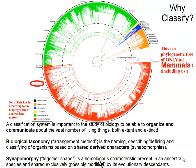Specifically, synapomorphies are homologous characteristics present in an ancestral species and shared — possibly modified — by its evolutionary descendants. An example is a backbone. All vertebrates have a vertebral column. The backbone in all vertebrates is a homologous structure shared along with the ancestor that was the first to have a backbone. So all vertebrates are related to each other because they all share that synapomorphy inherited from a common ancestor.